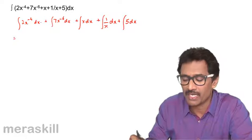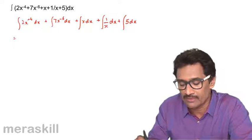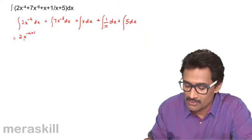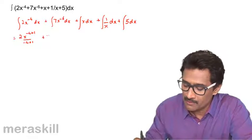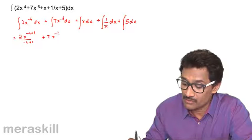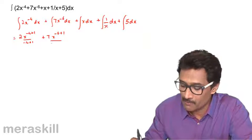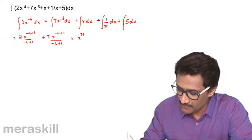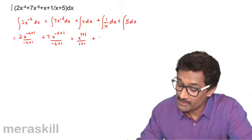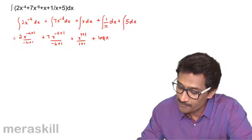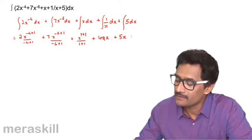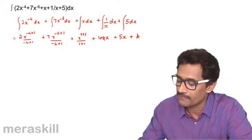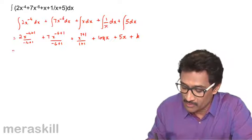In initial problems we break it up this way; as we go further we will evaluate directly. This gives: 2x raised to minus 4 plus 1 upon minus 4 plus 1, plus 7 into x raised to minus 6 plus 1 upon minus 6 plus 1, plus x raised to 1 plus 1 upon 1 plus 1, plus log x, plus 5x, and the summative constant k which is k1 plus k2 plus k3 plus k4 plus k5.